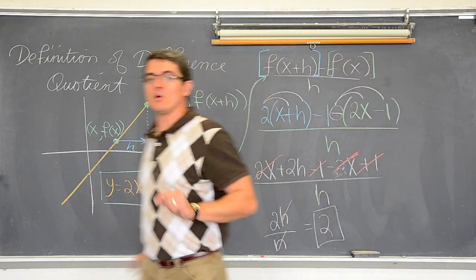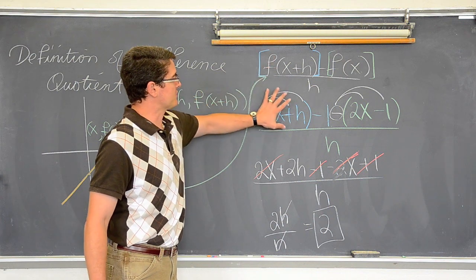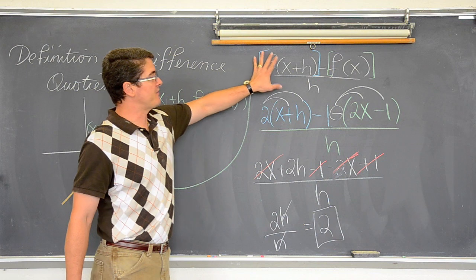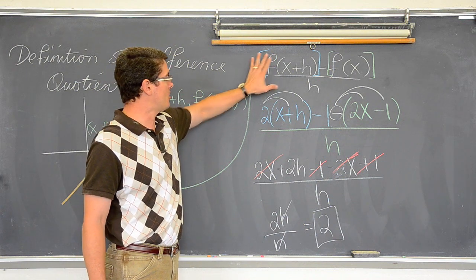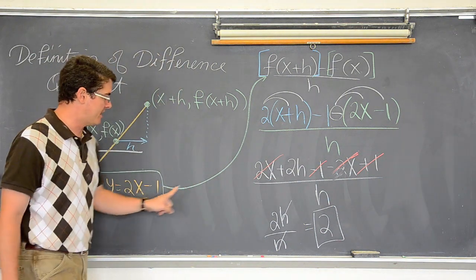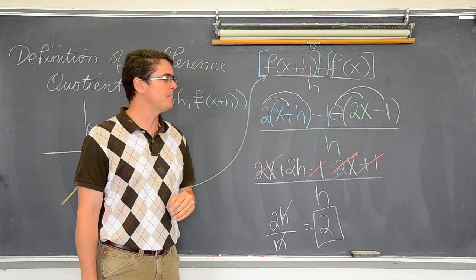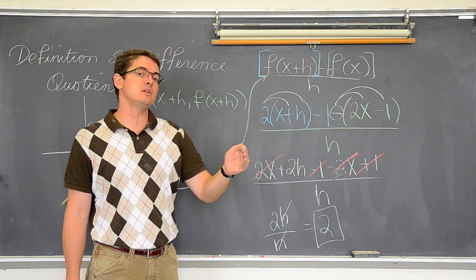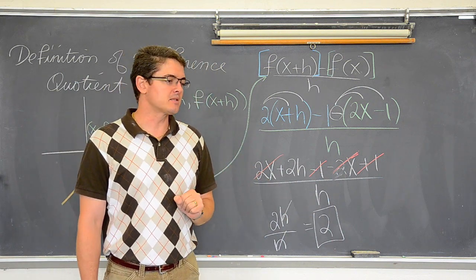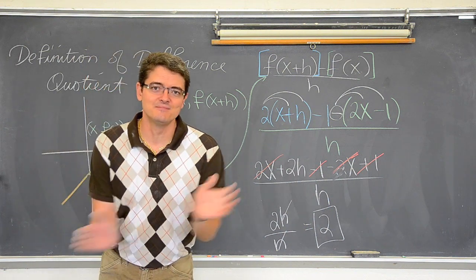So I started with a function that I knew had a slope of 2. I applied it, or passed it through, the definition of difference quotient, which I said was a fancy way of saying slope, or defining slope. And indeed, once everything cleared out, I got an answer of 2. Now, your pre-calc book will have a more complicated version of this where maybe it is a quadratic formula. If you have a curved line, its slope is constantly changing. So you will have more than just a regular 2. It might be like 3x minus 4. Plus h. But, I believe I am close to running out of time. So thank you very much. Have a great day.